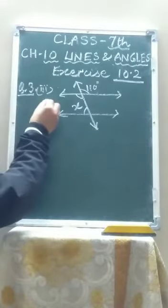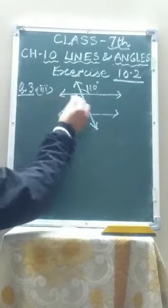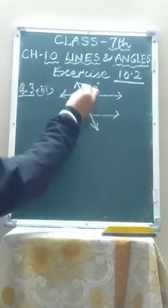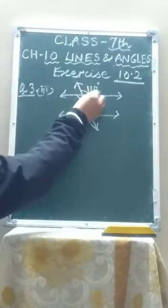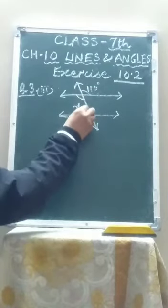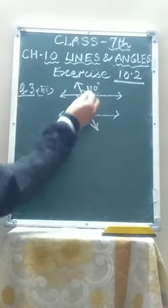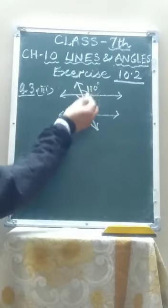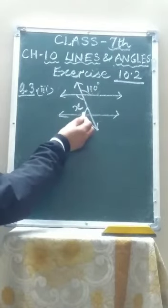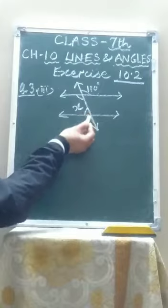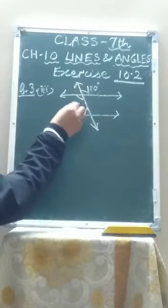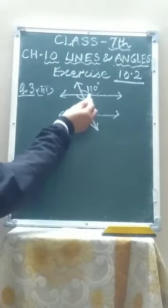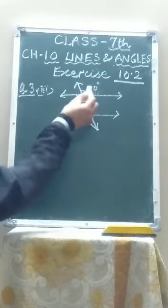Now question number 3, third part. These two are parallel lines and the transversal is cutting them. This angle is 110 degrees and you have to find the unknown angle x. These two angles have no direct relation to each other, so we have to find another angle through which we can find the value of x. We cannot directly find x using 110 degrees.